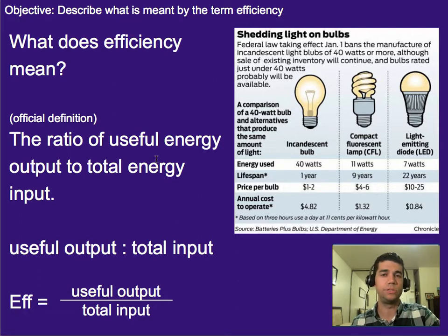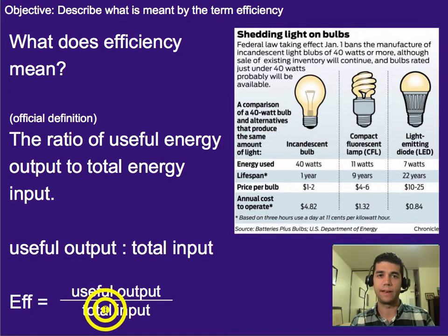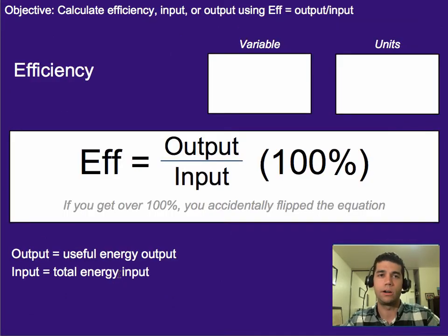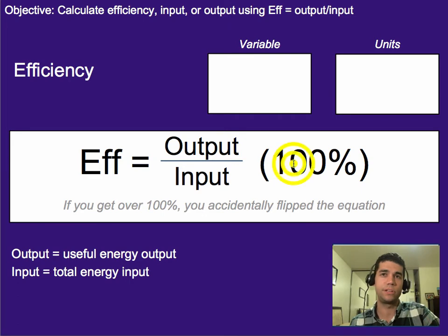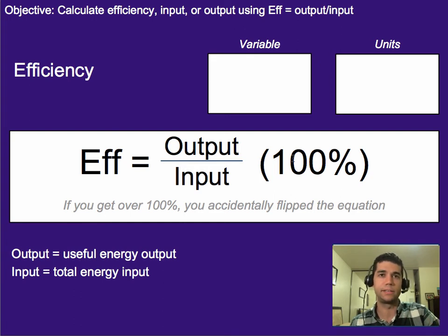Most of the time we like to do these as percentages. So even though you might do useful output divided by total input, you'd need to multiply by 100 to convert it into a percentage, which leads us to our equation. Efficiency equals output divided by input — where useful output is whatever it is you're finding useful, divided by the total amount of input, in this case usually energy — and then if you want to convert it into a percentage, you just multiply by 100 percent. So if this comes out to one unit of output for every two units of input, that would be 0.5, and by multiplying by 100 percent you'd get 50 percent.